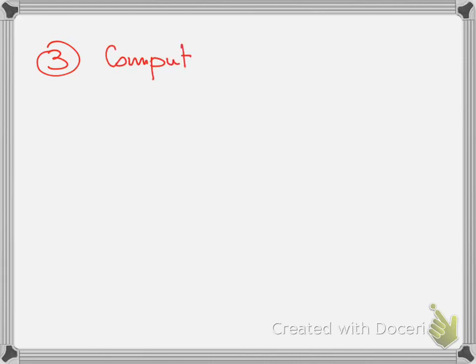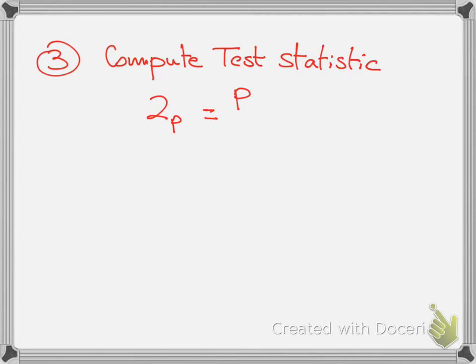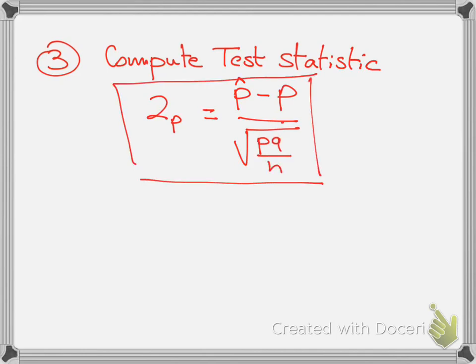Step three: compute the test statistic. The formula is z_p equals p-hat minus p, over the square root of pq over n. Here p-hat equals r over n, and q is the probability of failure, equal to one minus p.